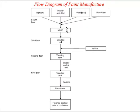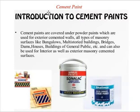To manufacture a paint, the process is: add pigment, thinner, vehicle oil, and plasticizer together and mix in a mixer. Then place the mixture in a grinding mill so that all five components are mixed properly. After that it is transferred to a container, and finally packed and shipped for consumer use.